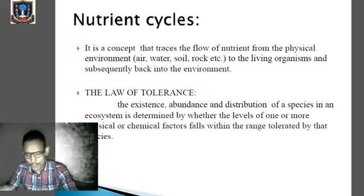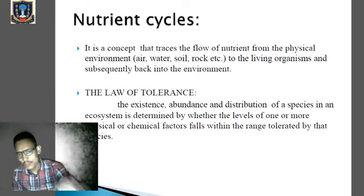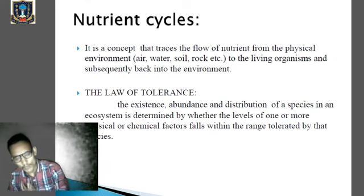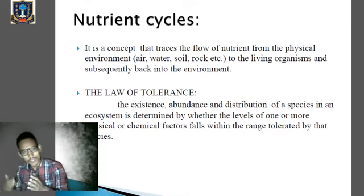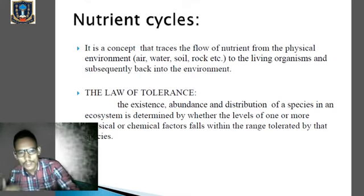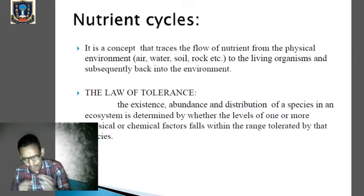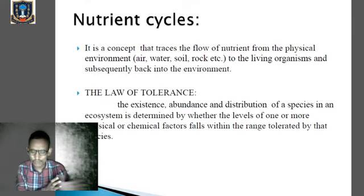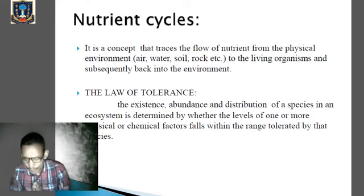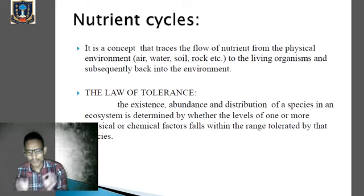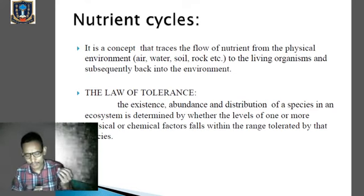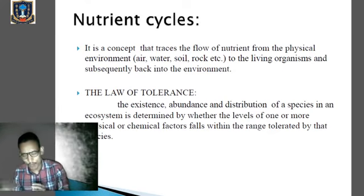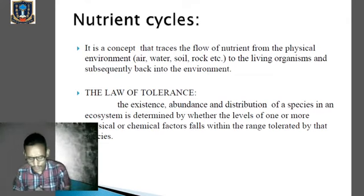Now let's talk about the nutrient cycle, or biogeochemical cycle. It is a concept that traces the flow of nutrients from the physical environment to living organisms and back to the environment. The nutrients present in the physical environment are utilized by plants and animals and then returned to the environment. These cycles are under the direct or indirect control of solar energy. Every living organism requires a large number of nutrients for its survival. Examples of these cycles include carbon, nitrogen, phosphorus, and sulfur cycles. Today we will deal with the nitrogen cycle only.